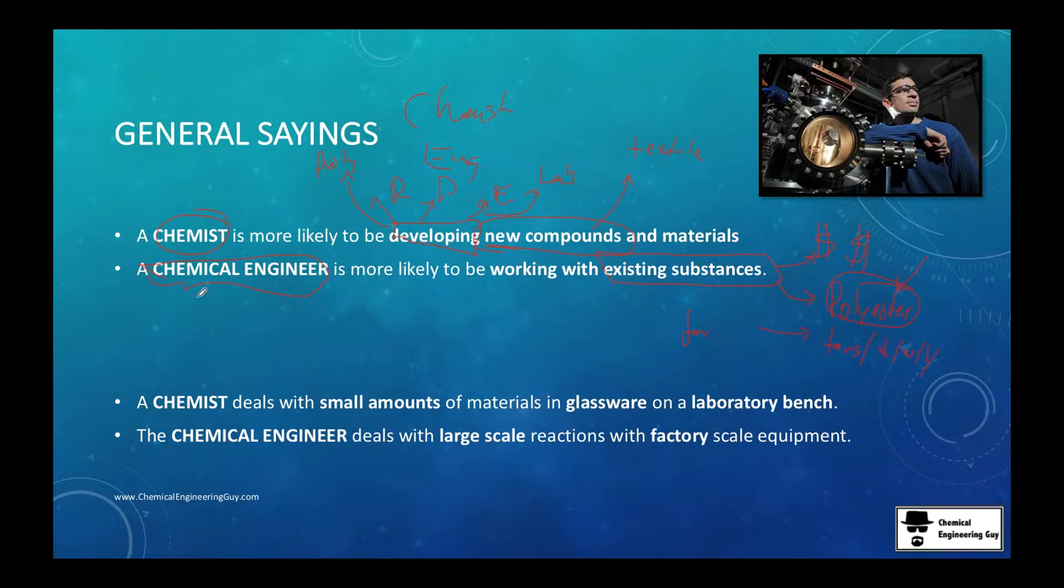Also, chemists deal with small amounts of material, typically working in glassware in a laboratory bench. Small amounts, typically especially if you are doing new materials you want to produce some grams or maybe even kilograms. You are doing this textile, same example, you will be working maybe producing 100 grams and doing some experiments or lab testing and so on. You don't need that much to produce.